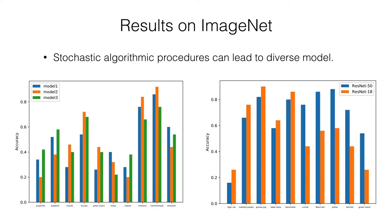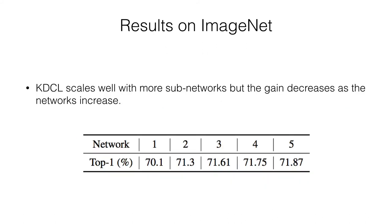The main reason is that stochastic algorithmic procedures can lead to diverse models. We train ResNet-18 three times with the same setting but different random seeds. As shown in the left figure, the accuracy of different categories varies dramatically. The right figure shows that even ResNet-18 beats ResNet-50 on some categories. KDCL scales well with more sub-networks, but the gain decreases as the number of networks increases. In this table, all networks are ResNet-18 to prevent the impact of network performance differences. We conjecture that the mutual information between the strong ensemble network and the additional network increases as the ensemble size grows.